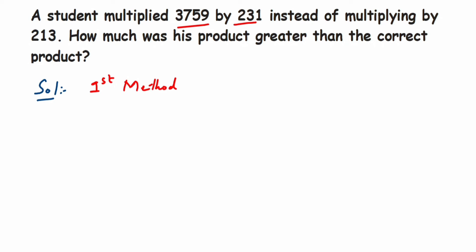So 3759 multiplied by 231 minus 3759 multiplied by 213. Obviously, the product of these two numbers will be greater because 231 is greater than 213.